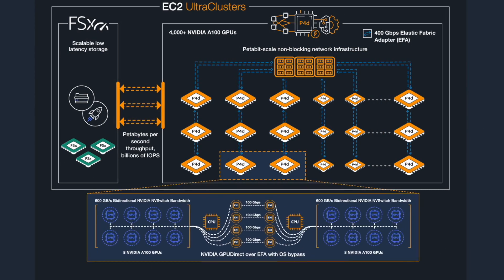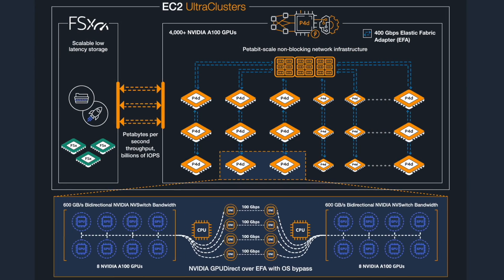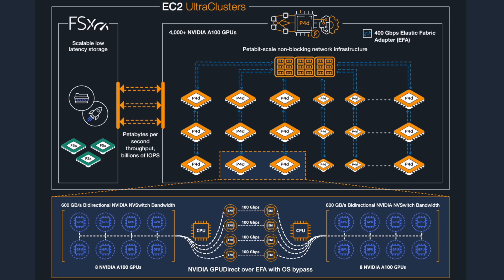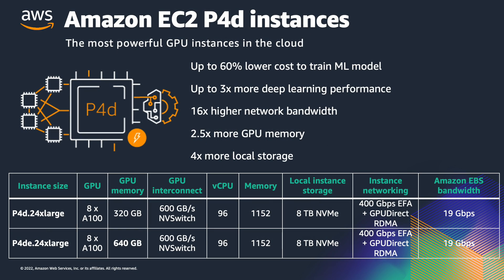One of the key things that customers have asked for is access to world-class supercomputing in the cloud, and our answer to that has been EC2 ultraclusters. That's been our access into having an on-demand world-class computer. Our first example of this is with P4D instances — AWS P4D instances — and that features the eight A100s on the single baseboard.